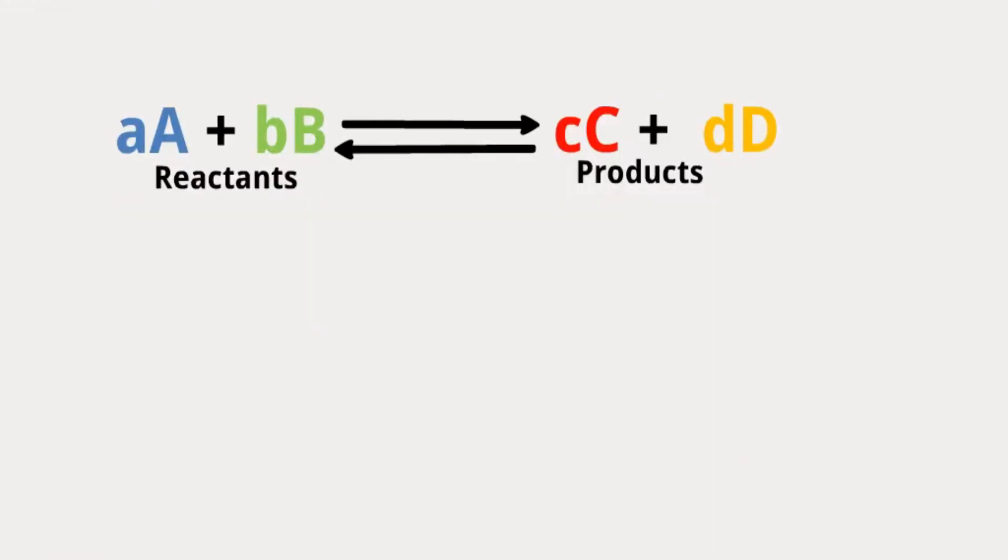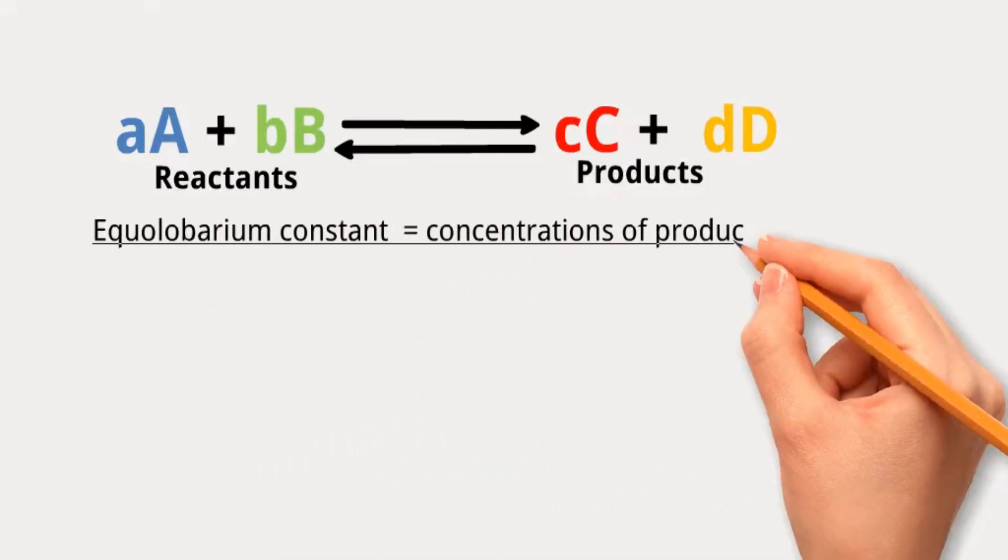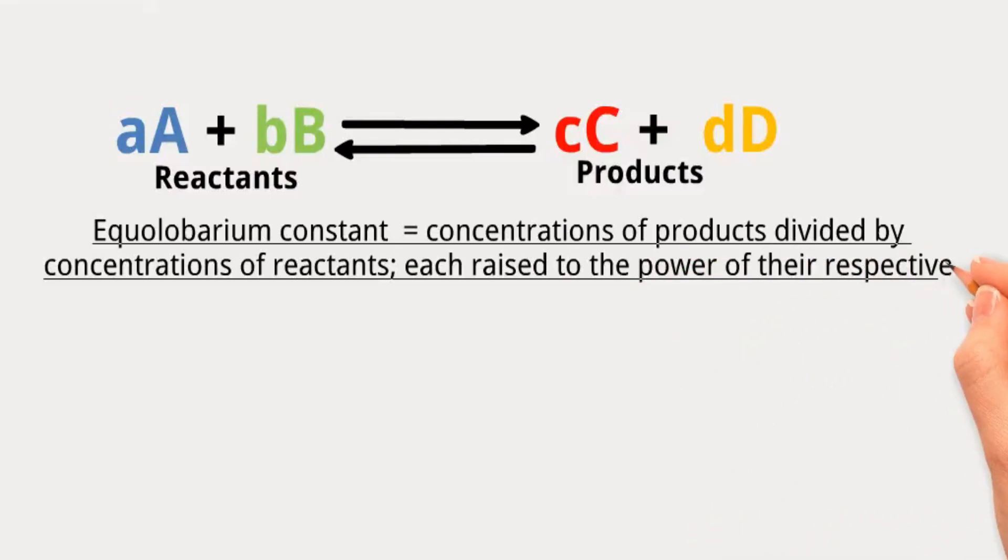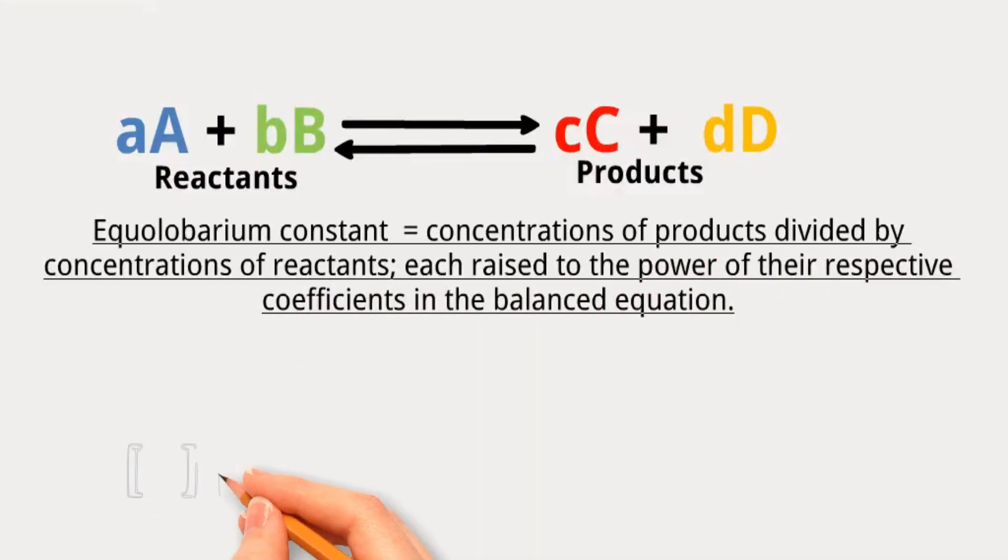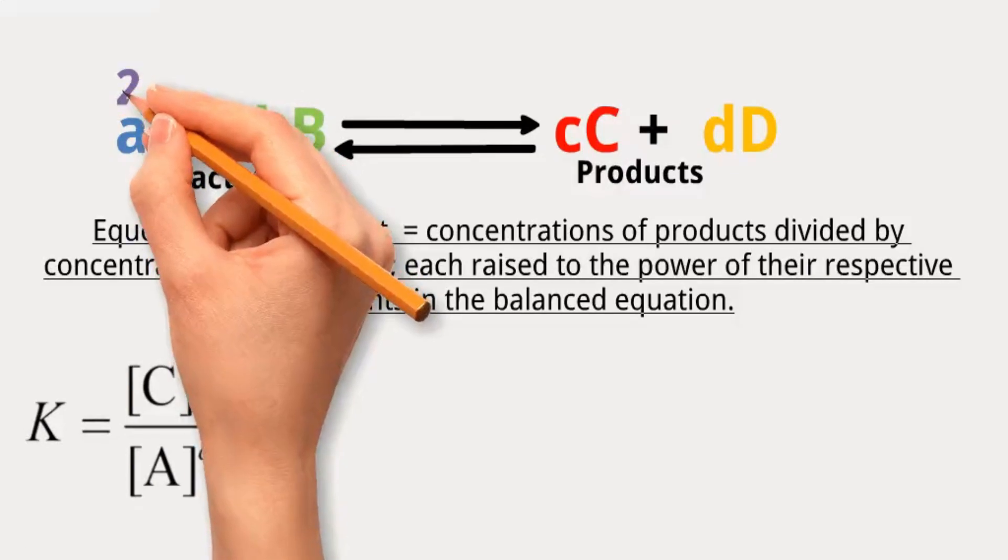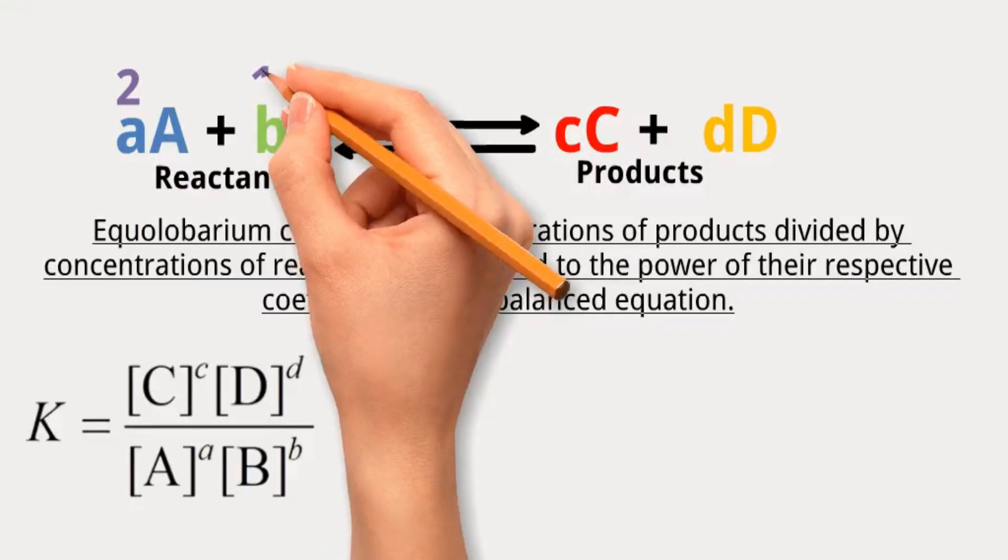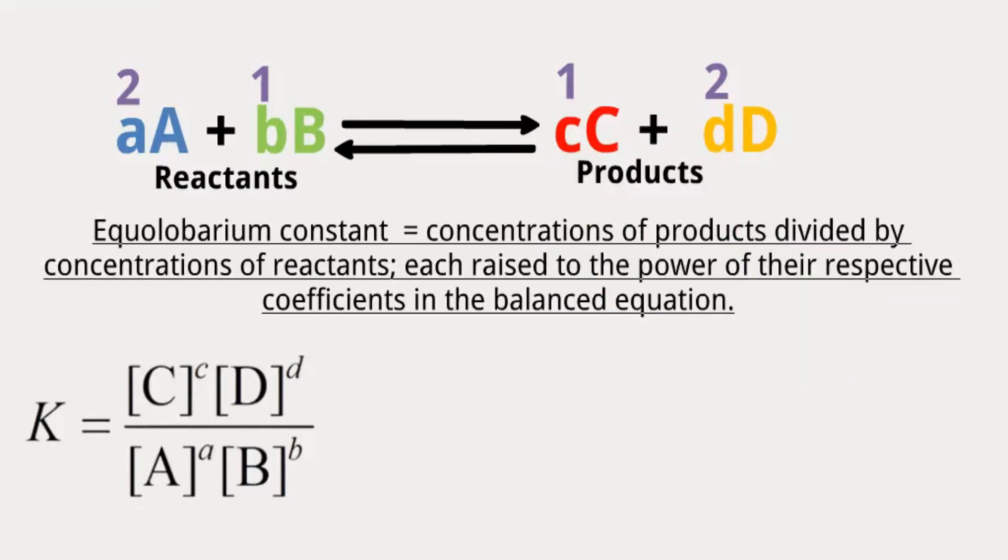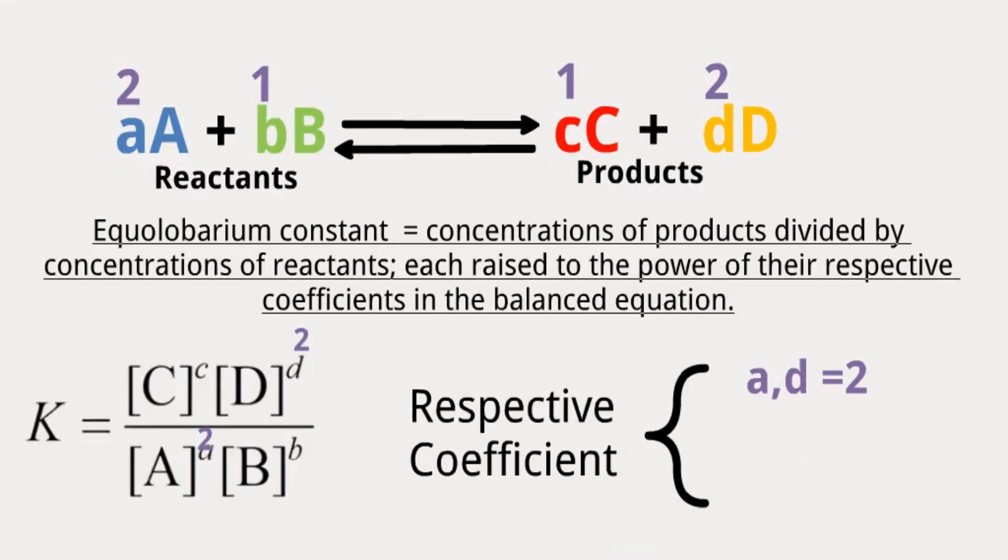It's calculated using concentrations of products divided by concentrations of reactants, each raised to the power of their respective coefficients in the balanced equation. This means that when two molecules of A are required to interact with one molecule of B to produce one molecule of C and two molecules of D, then the respective coefficients of A and D are equal to 2. In contrast, the respective coefficients of B and C are equal to 1.